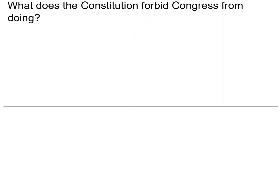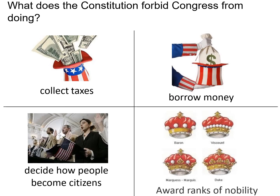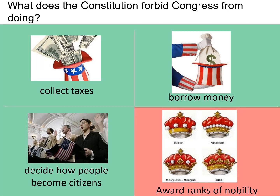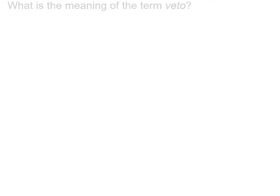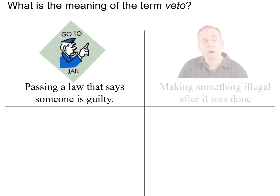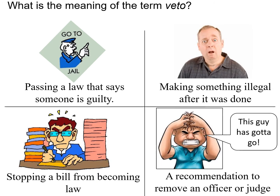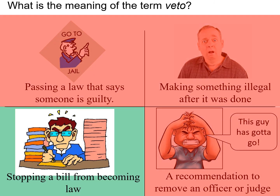What does the Constitution forbid Congress from doing? Awarding ranks of nobility. What is the meaning of the term veto? A veto is stopping a bill from becoming law.